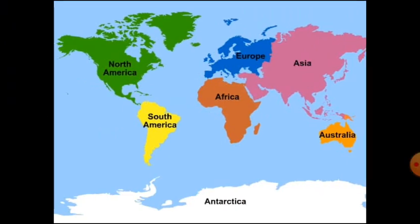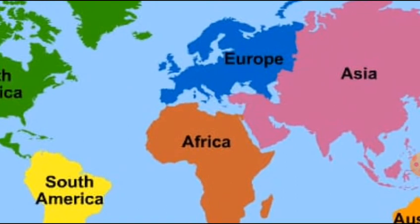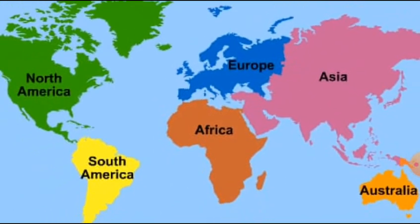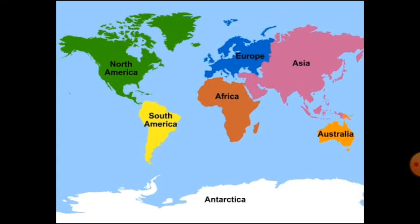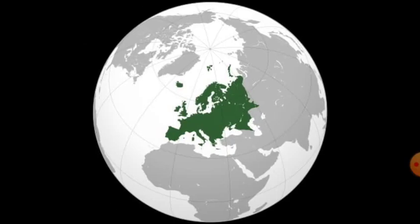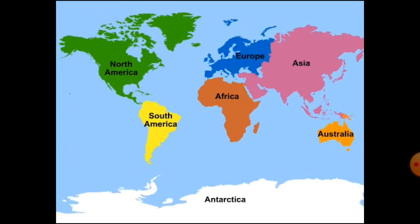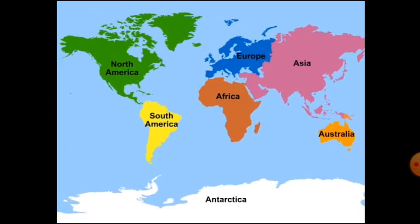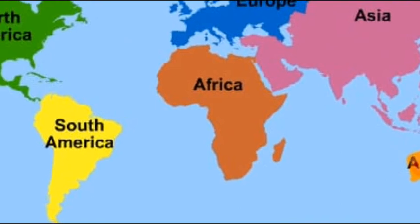Now we will talk about Europe. Europe is much smaller than Asia. Europe lies to the west of Asia. The Arctic Circle passes through Europe. Europe is bound by water bodies on three sides.